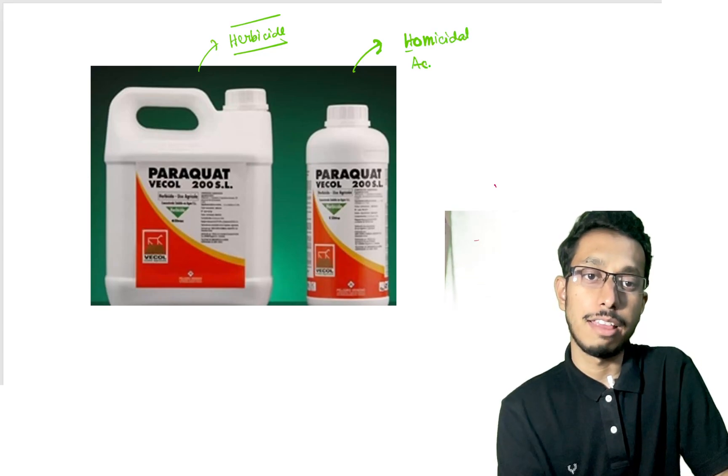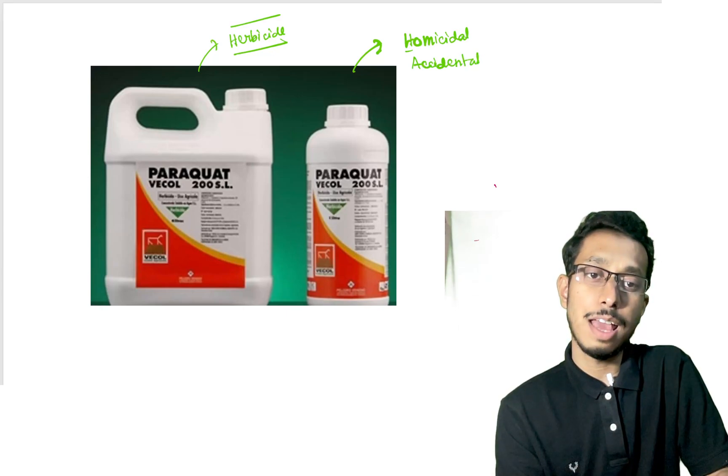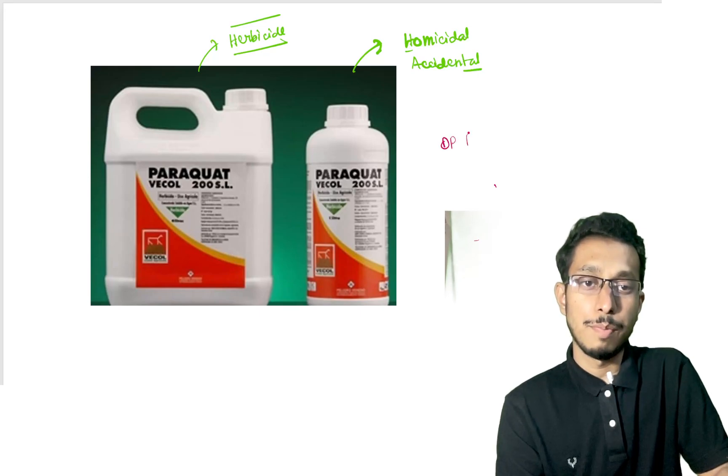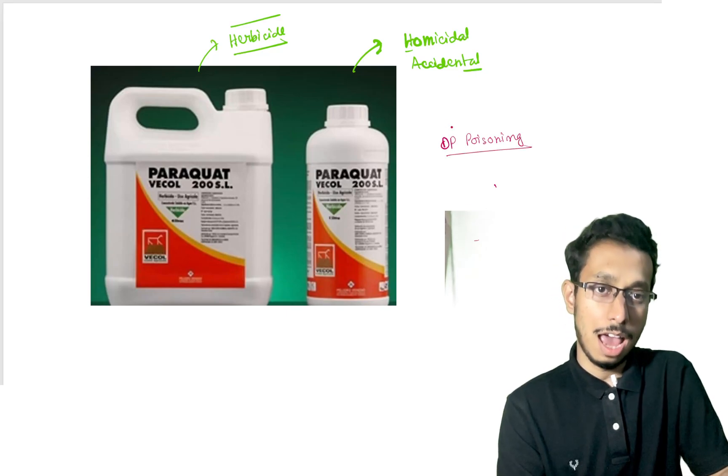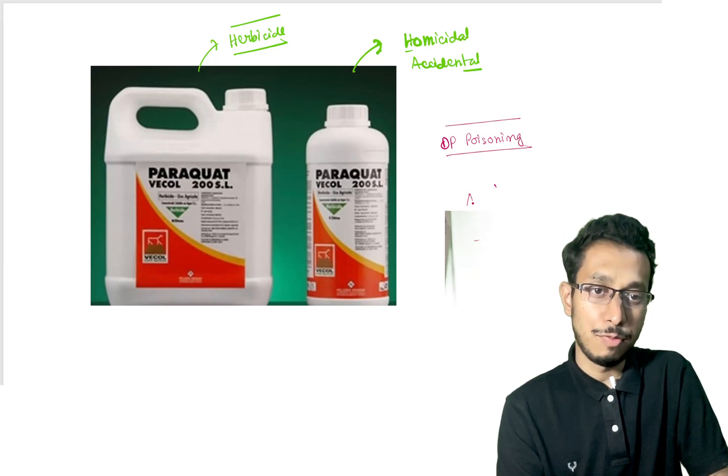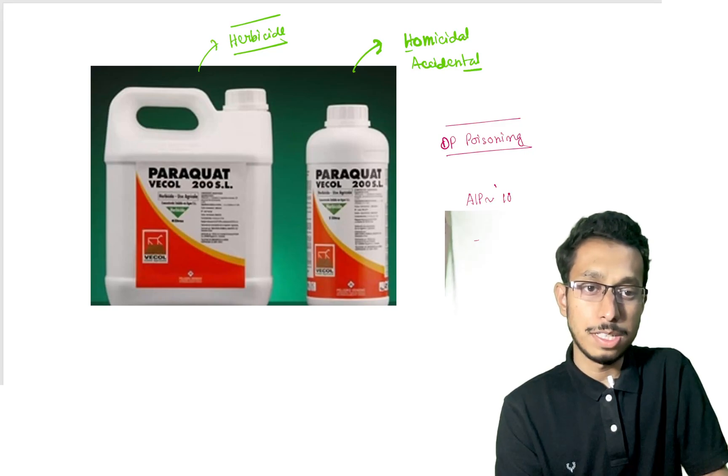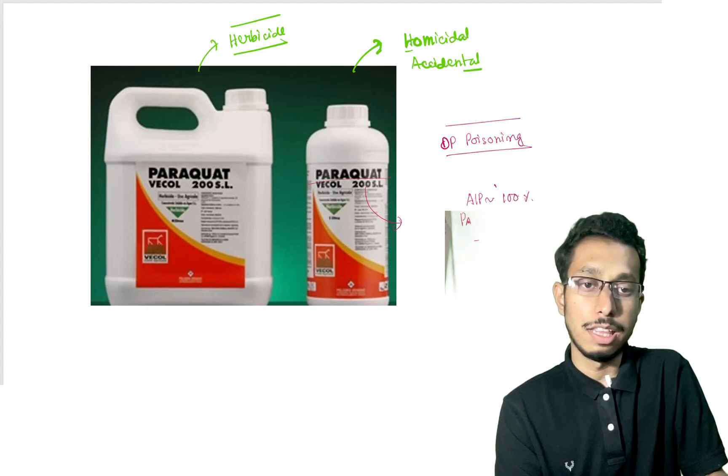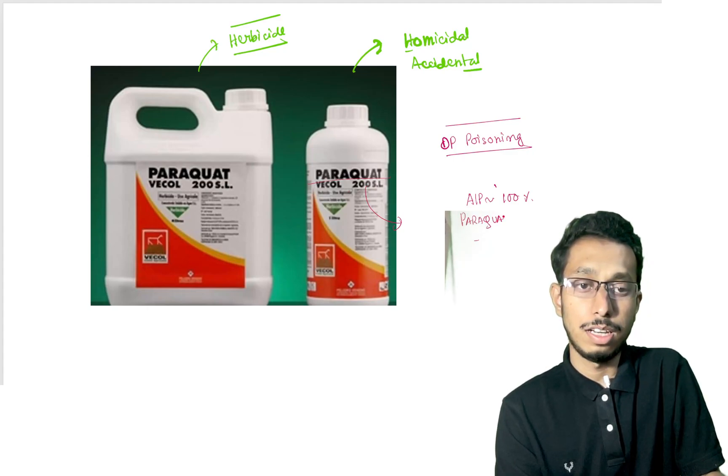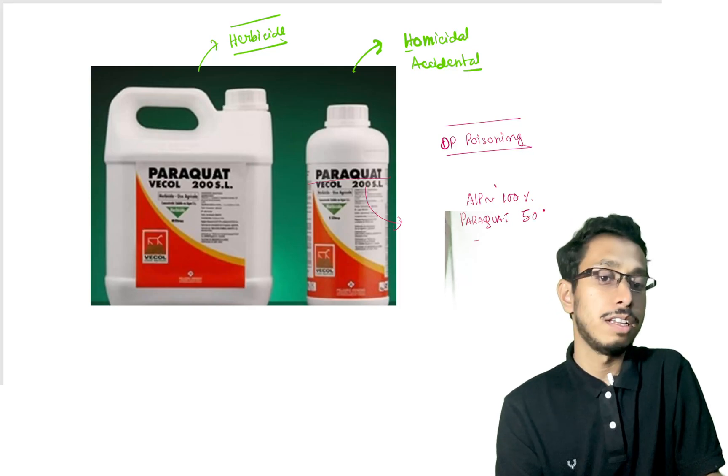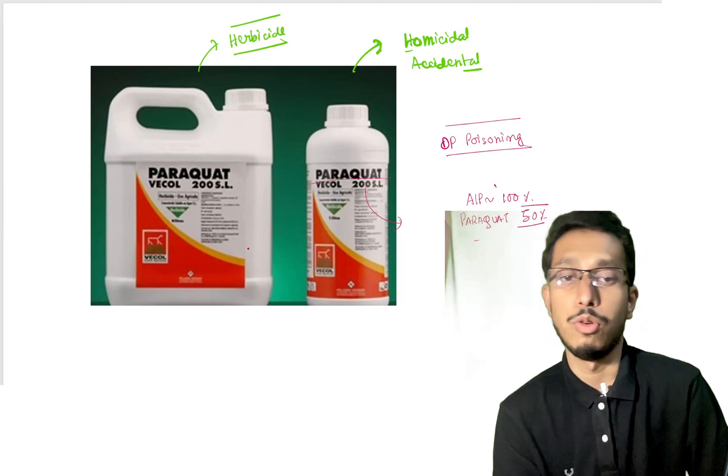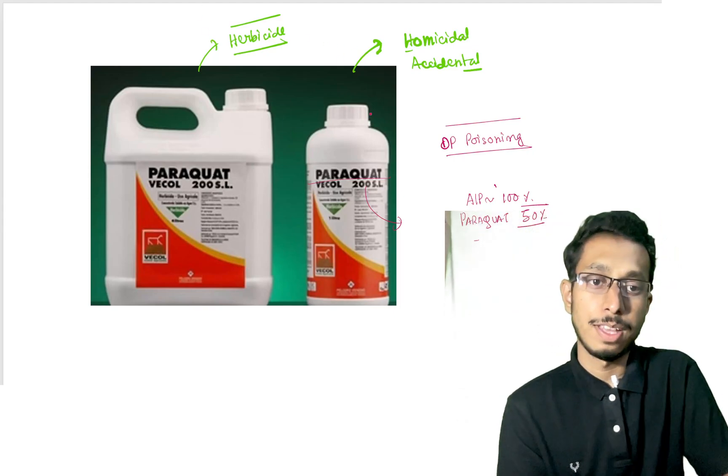Regarding agricultural poisoning, the most common cause worldwide is OP poisoning. However, some poisons cause very high mortality, for example aluminum phosphate which has almost 100% mortality rate. This paraquat has mortality ranging around nothing less than 50% in all cases.